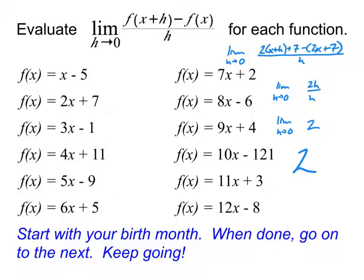Just to make sure you're on the right track, here's what your work might have looked like for doing the second one, 2x plus 7. You'll notice that in this case I ended up with 2h over h, the h's canceled out, and so I was just finding the limit as h approaches zero of 2. For some people this is confusing because there's no h to plug into — but it's always 2, so that limit just equals 2. So for that one the answer is 2. After you've done a few of these, maybe you could tell me what they all equal.